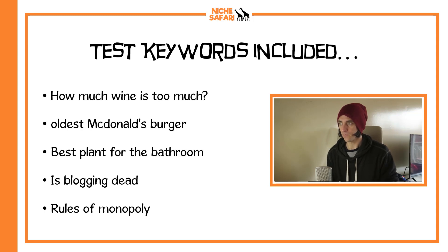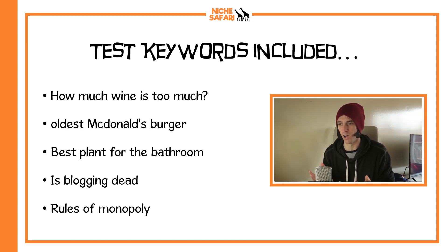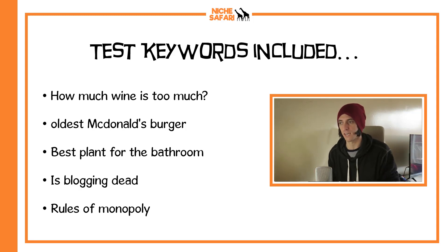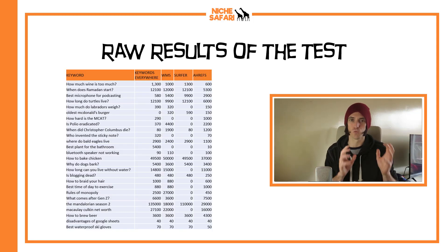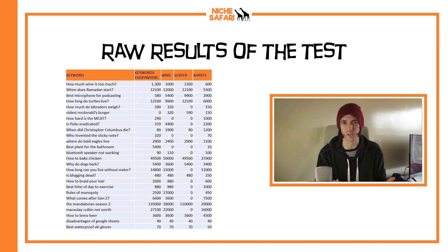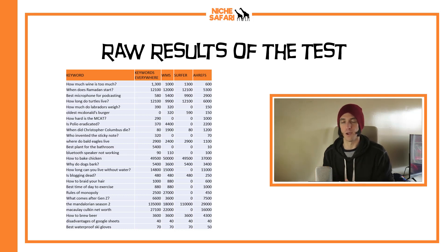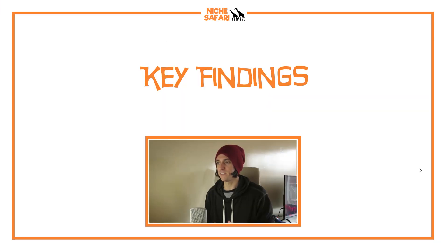There are some interesting details. I just came up with some random keywords like how much wine is too much wine, oldest McDonald's burger, best plant for the bathroom, is blogging dead, rules of monopoly — just tried to come up with some random keywords. I came up with 27. These are the raw results — you can pause this screen now if you want to have a look at them. But I just want to walk you through my findings, because it'd just be boring to go through every single one of them.